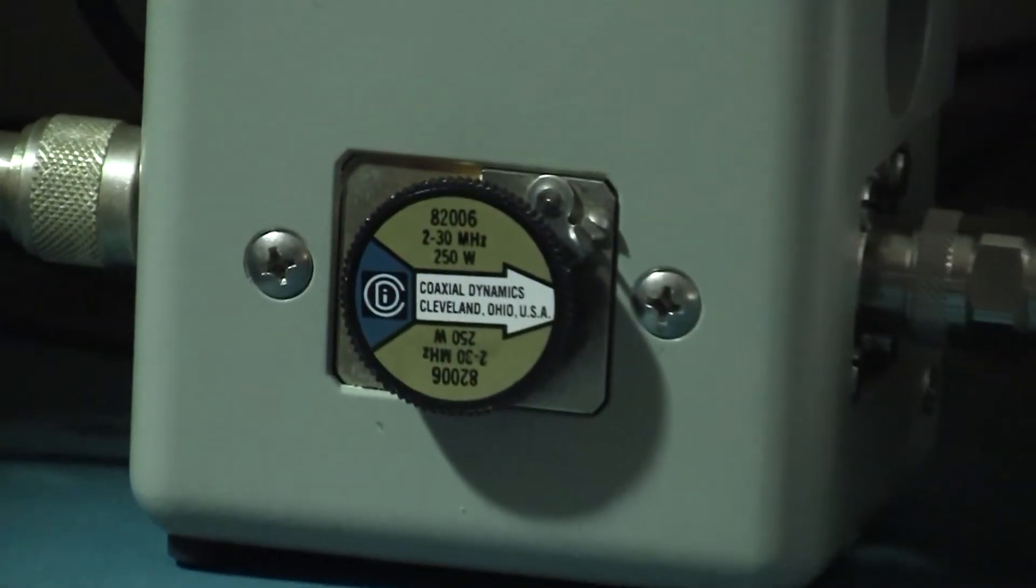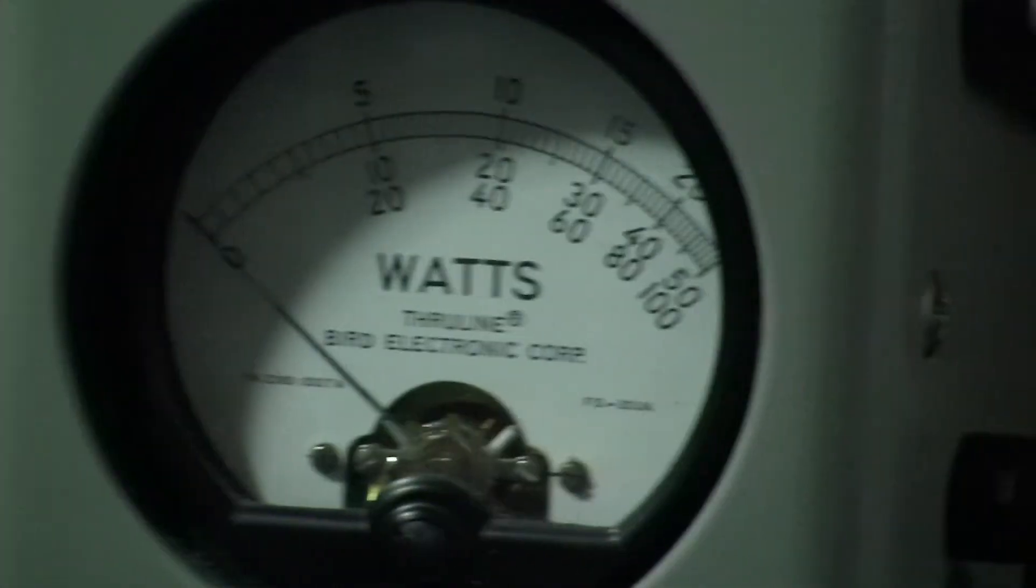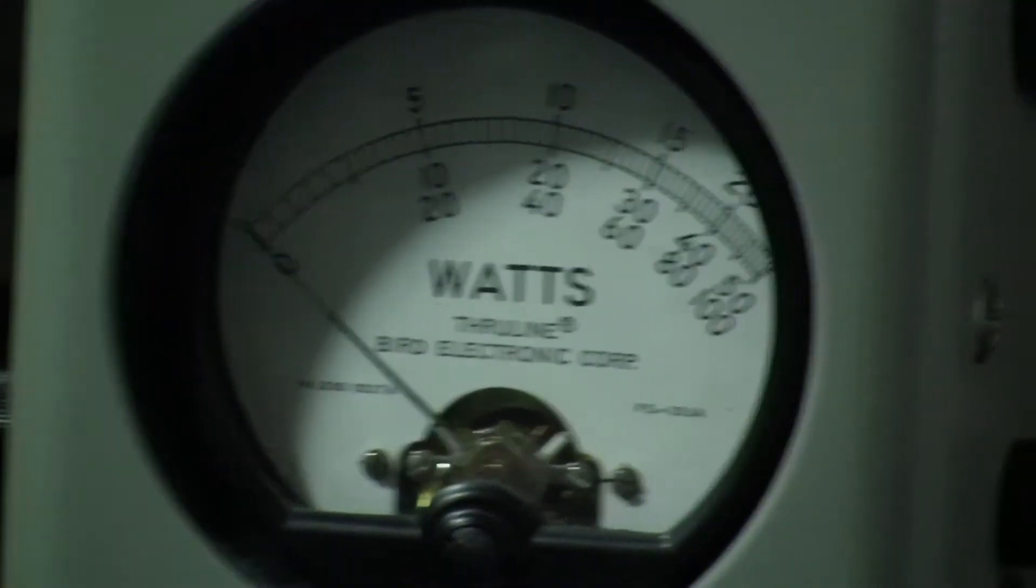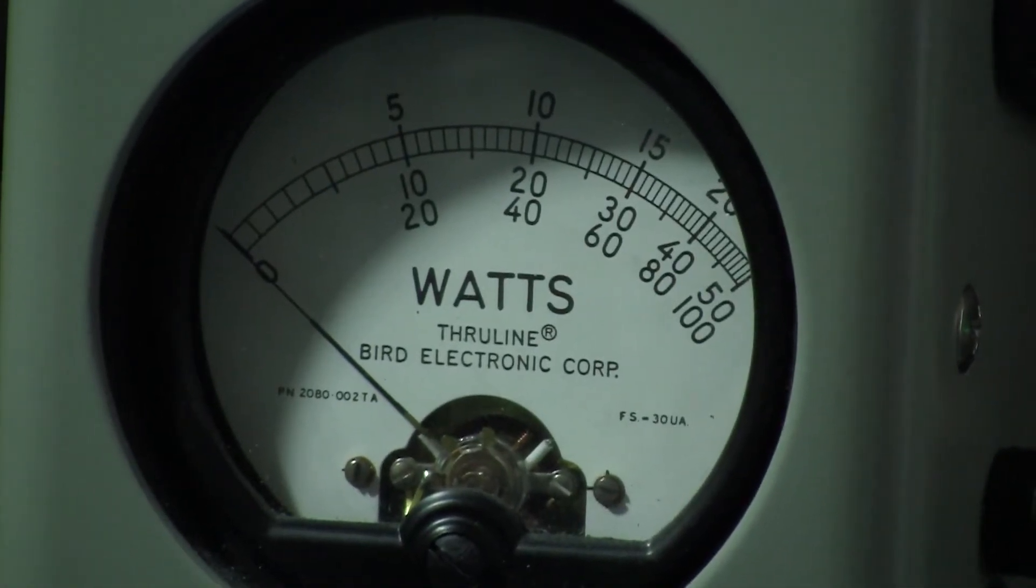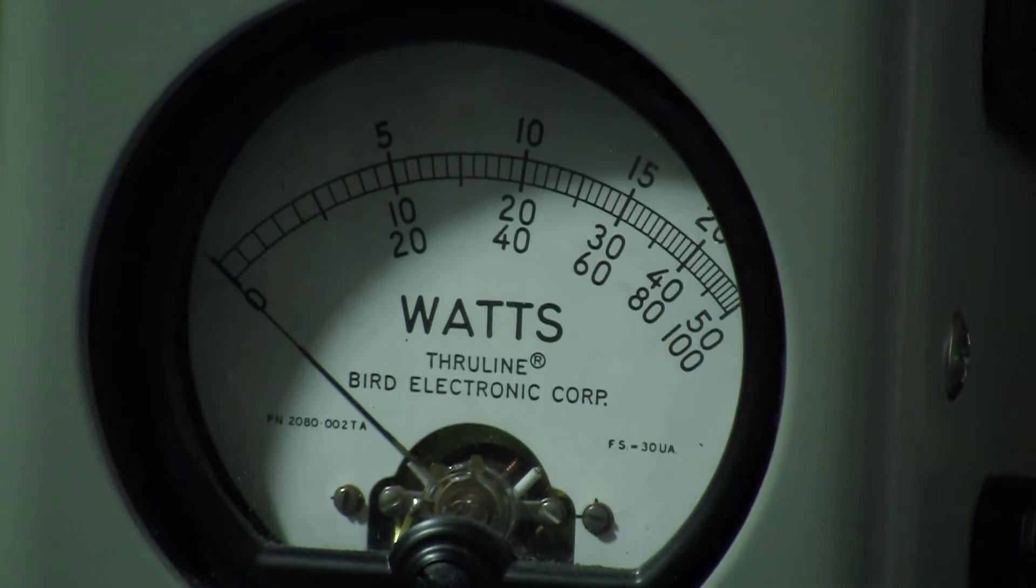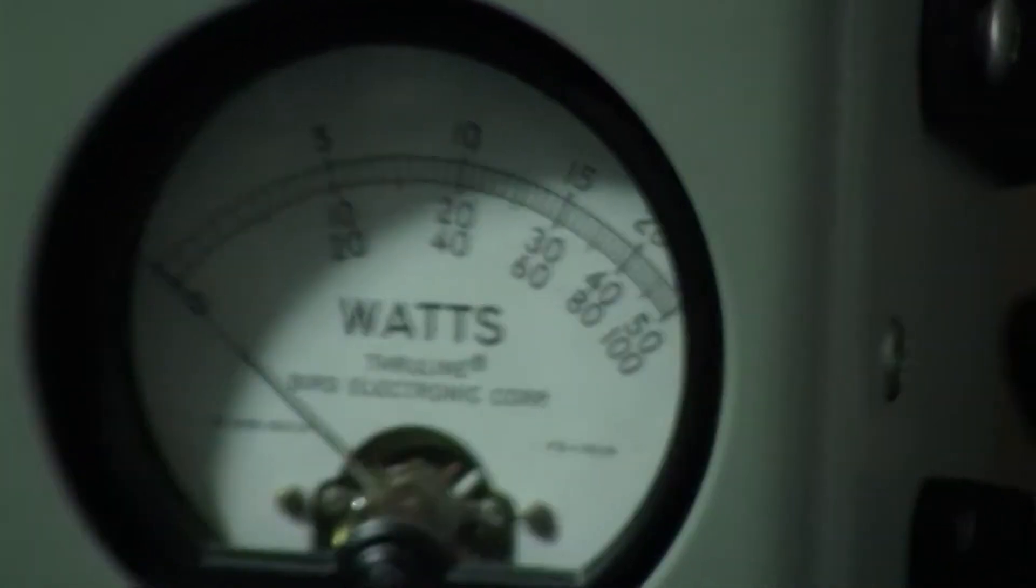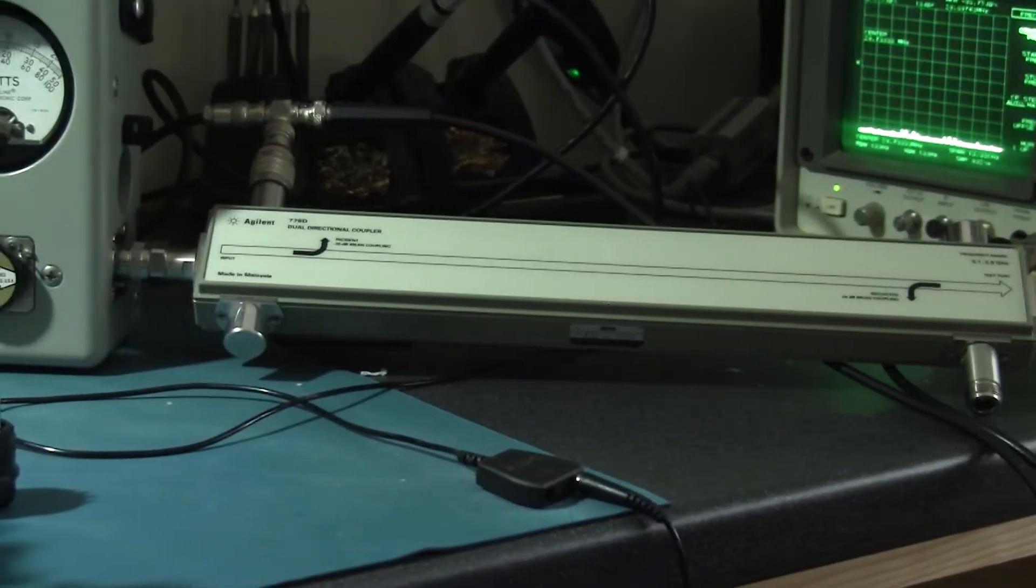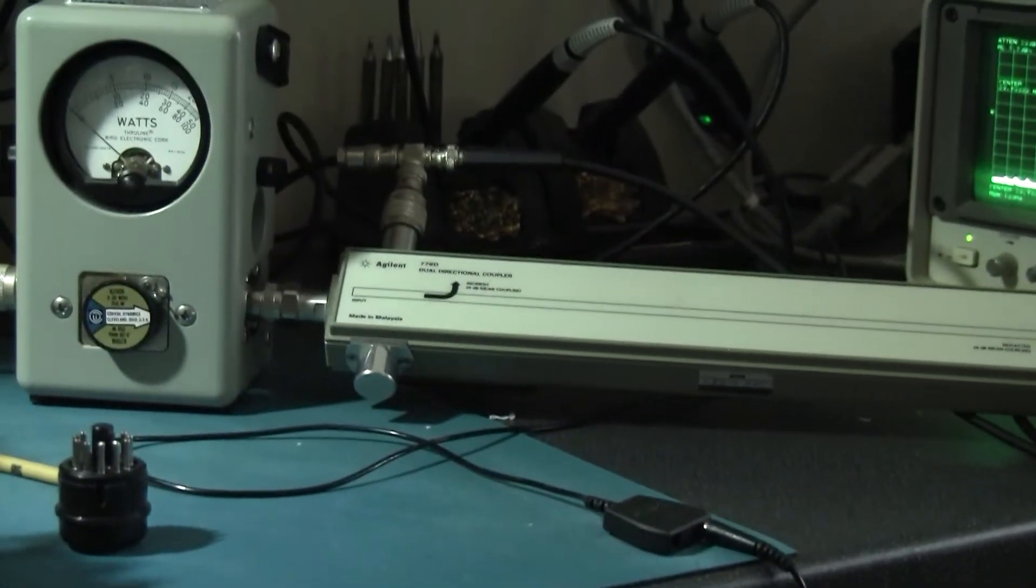It's a 250W stub covering 2-30MHz which means 100W will read about half scale. It's about there when we're tuning. And the output of the wattmeter is fed to an Agilent directional coupler to sample the RF.